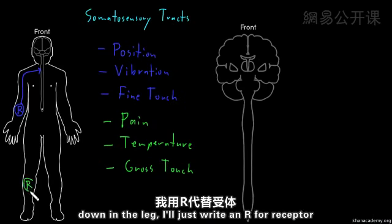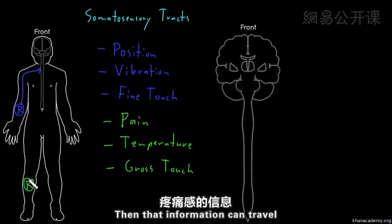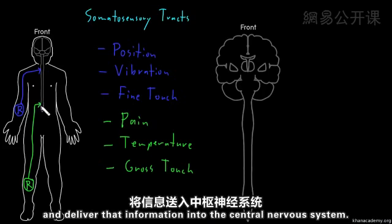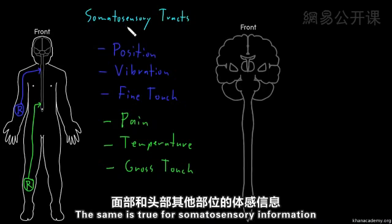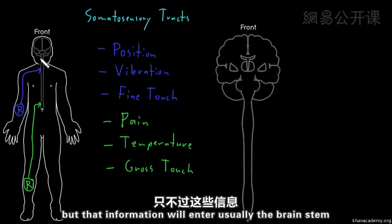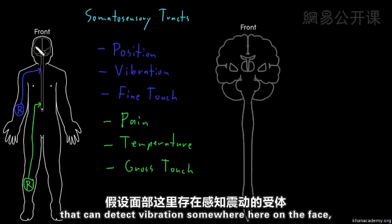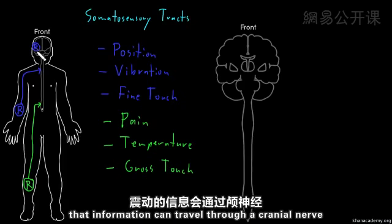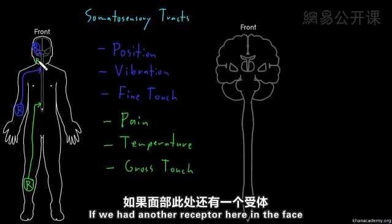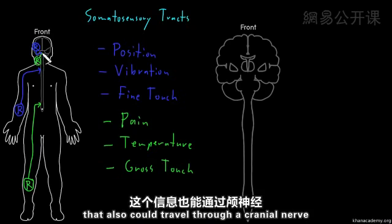The same is true for somatosensory information from the face and other parts of the head, but that information will enter the brainstem through cranial nerves instead of entering the spinal cord through spinal nerves. For instance, a receptor detecting vibration on the face could travel through a cranial nerve into the brainstem, and a receptor detecting temperature on the face could also travel through a cranial nerve and enter the brainstem.